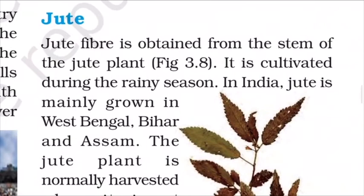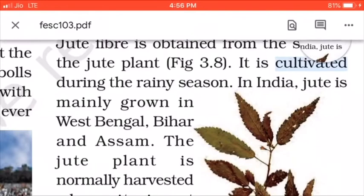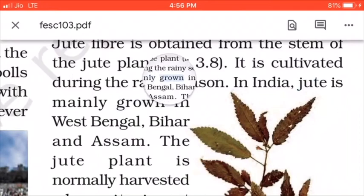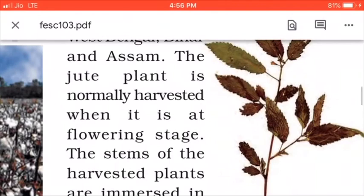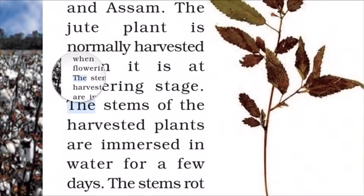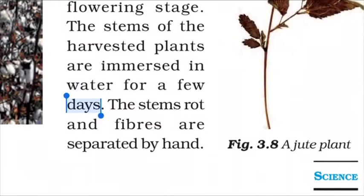Jute: Jute fiber is obtained from the stem of the jute plant — specifically from the bark covering the stem. It is cultivated during the rainy season. In India, jute is mainly grown in West Bengal, Bihar, and Assam. The jute plant is normally harvested when it is at the flowering stage. The stems of the harvested plants are immersed in water for a few days. The stems rot and fibers are separated by hand.